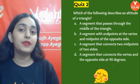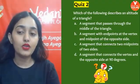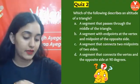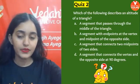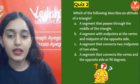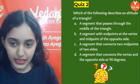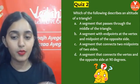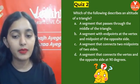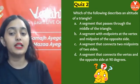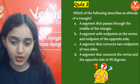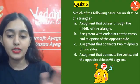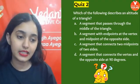Next quiz question: Which of the following describes an altitude of the triangle? Options: A) a segment that passes through the middle of the triangle; B) a segment with endpoint at the vertex and the midpoint; C) a segment that connects two midpoints; D) a segment that connects the vertex and the opposite side at 90 degrees. Time starts now.